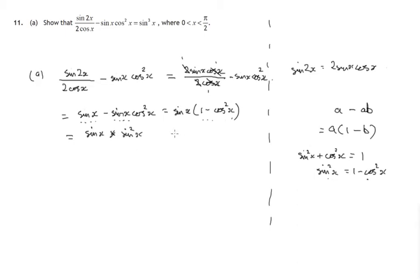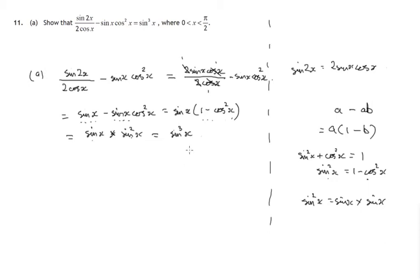And I think we're there. Sine x times sine squared x — remember what sine squared x means: it's sine x times sine x. So this will be sine x times sine x times sine x, which is sine cubed x. And that's the right hand side, so we're done. That's part A.